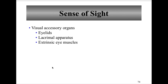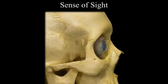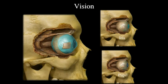Moving on with sight — the sense of sight is vision. The organ of vision is the retina of the eye. The sensory receptors are called photoreceptors. When photoreceptors are stimulated to threshold, impulses travel within the optic nerve, which is cranial nerve 2, to the visual occipital cortex for interpretation. The retina is the organ of interest in the eye.